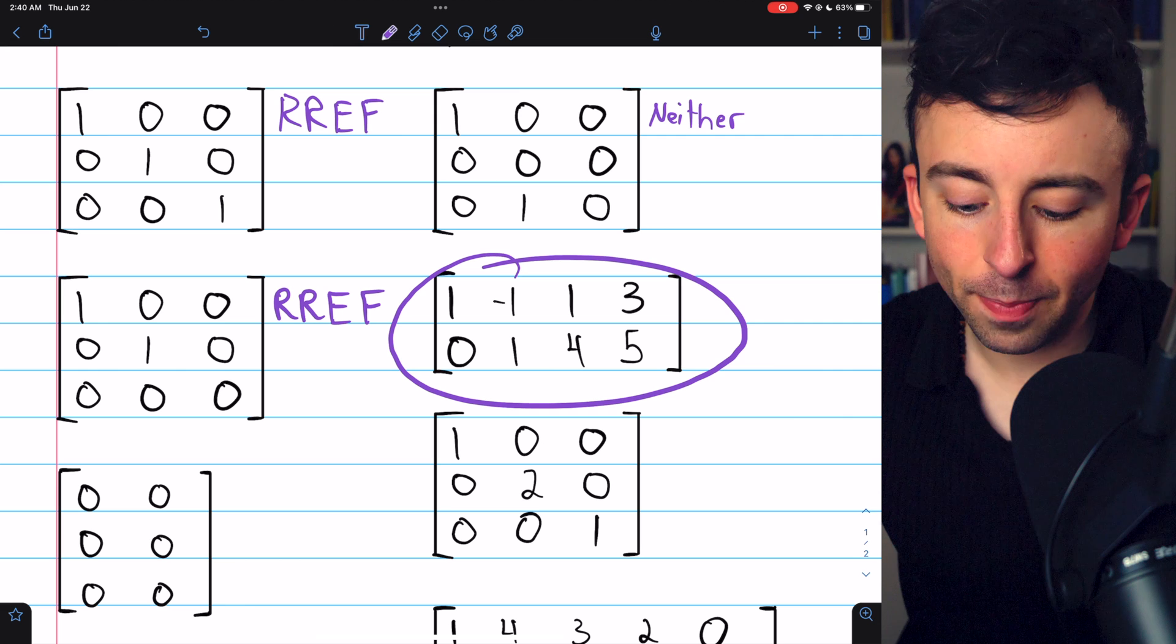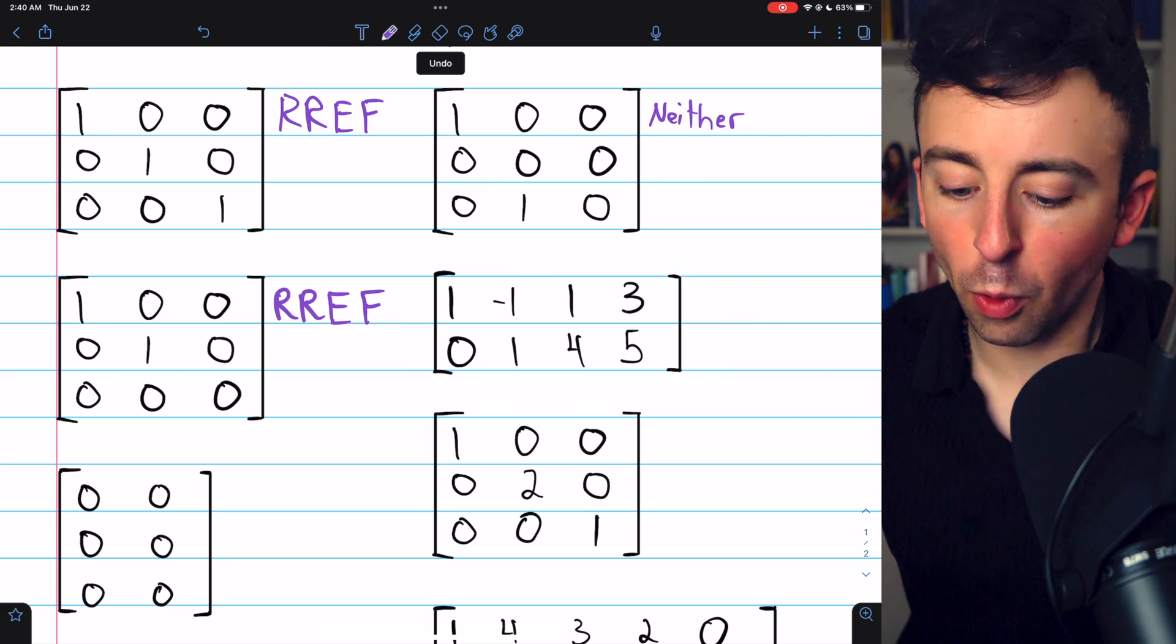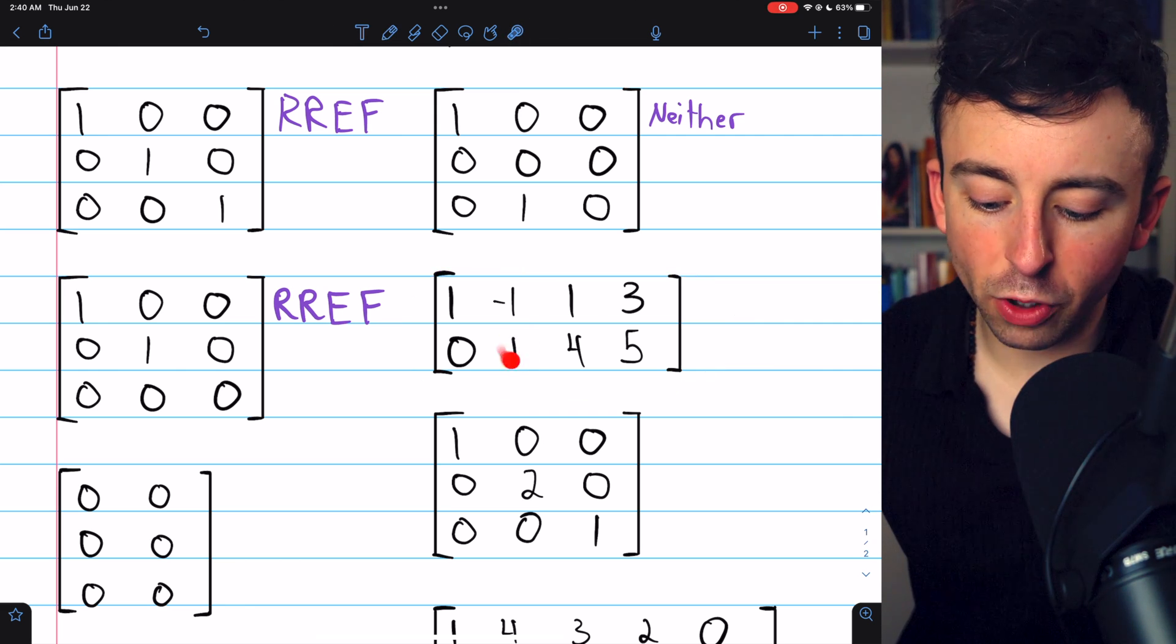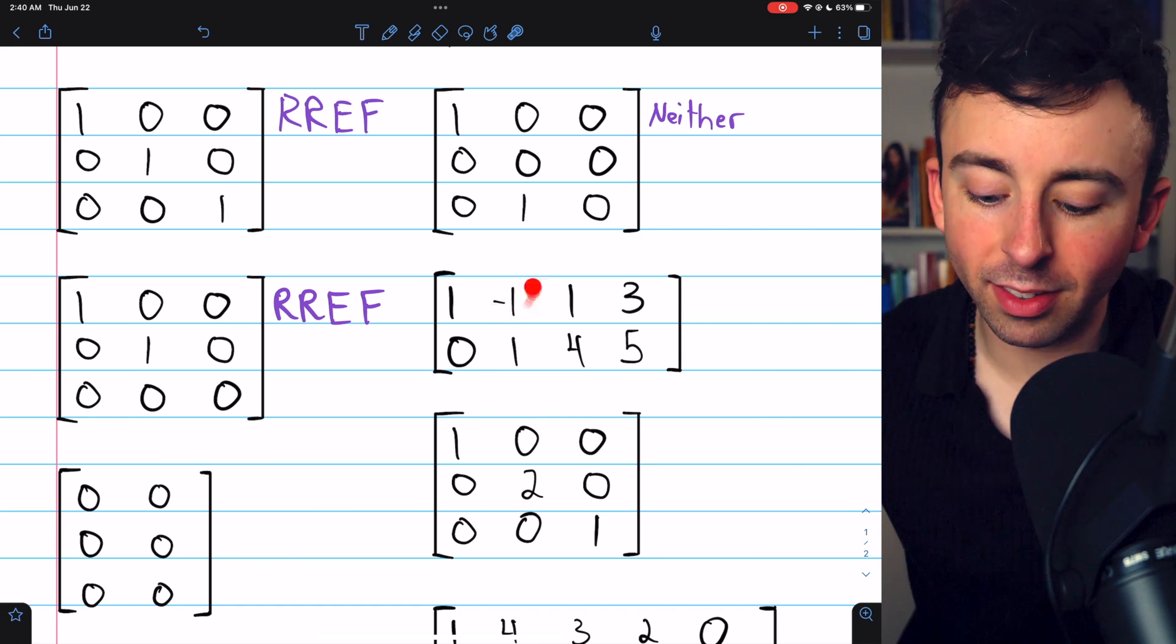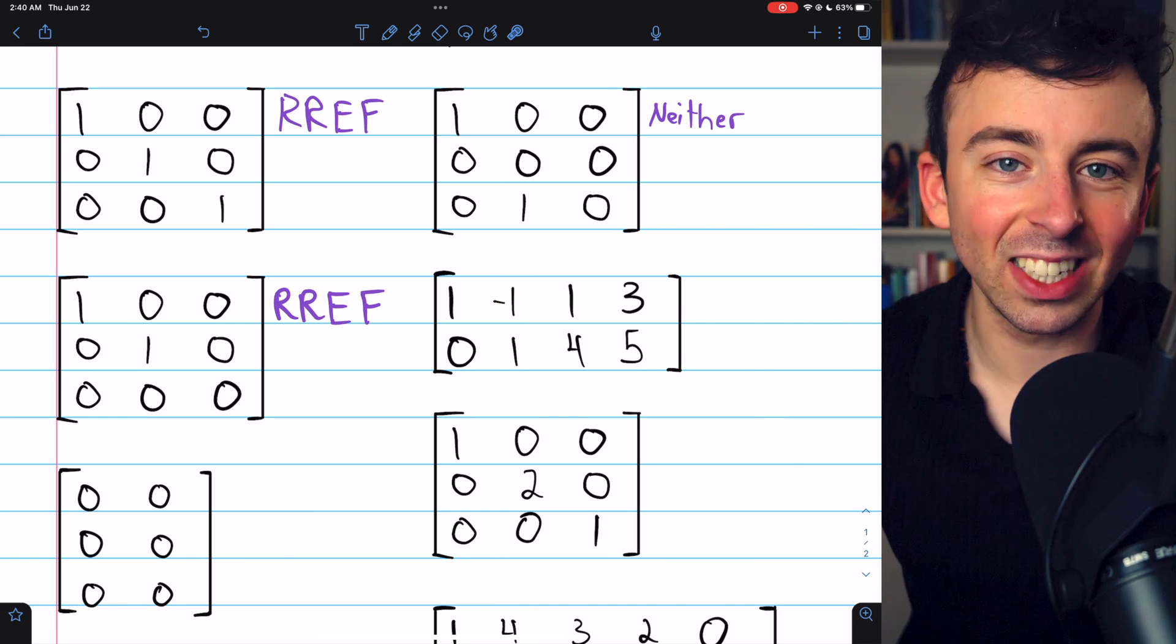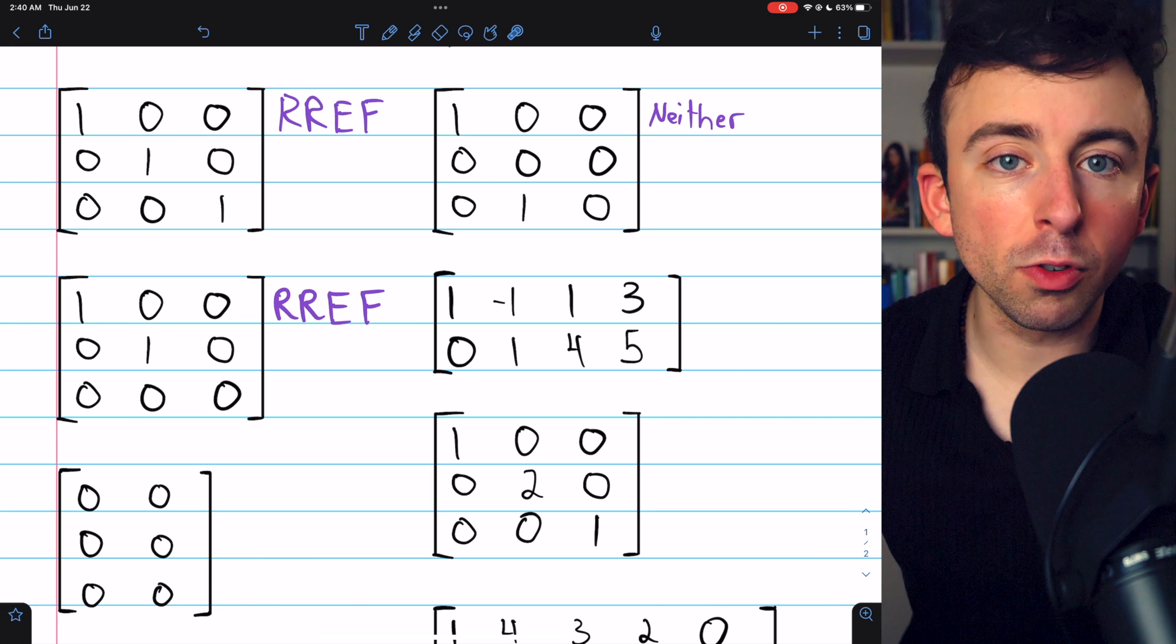What about this matrix? It's not in reduced row echelon form because we have this leading one in row two that doesn't have zeros above it. There is a non-zero number above this leading one. That's not allowed in reduced row echelon form.